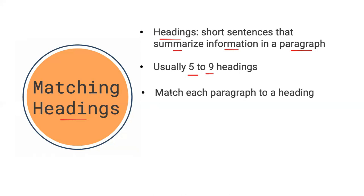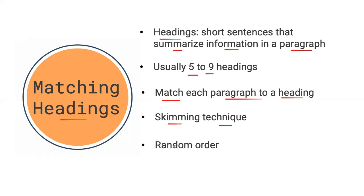The goal of this question type is to match each paragraph to a heading, based on the general information in the text. To do this we're going to use the skimming technique — we want to understand what is the main point of each paragraph. Another important fact is that all of the answers will come in a random order, so you can't really use a strategy based on following a certain order. Headings will be listed out of order, so we'll just have to find the information in an efficient way.